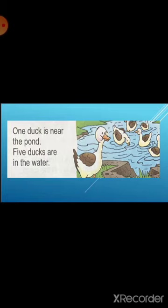Come to the first paragraph. 'One duck is near the pond. Five ducks are in the water.' Children, look at the picture. One duck is near the pond and five ducks are in the water. When we are talking about one duck, then we will use 'is', and when we are talking about more than one duck, then we will use 'are'.